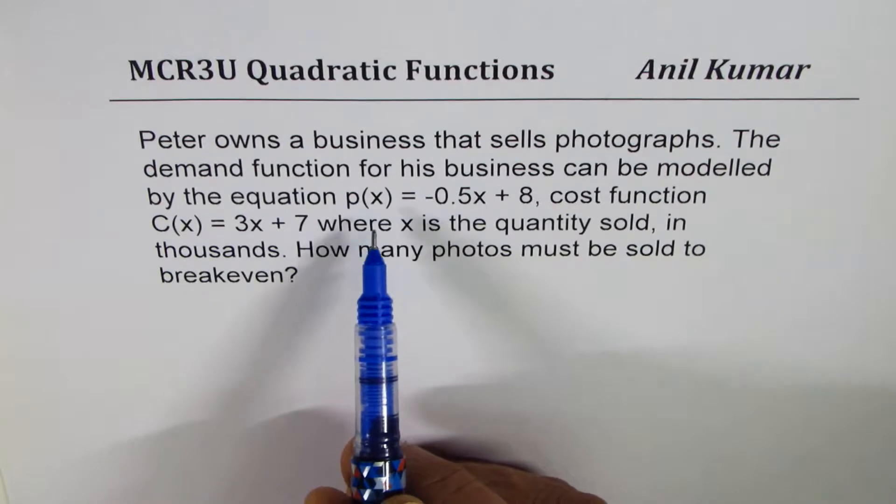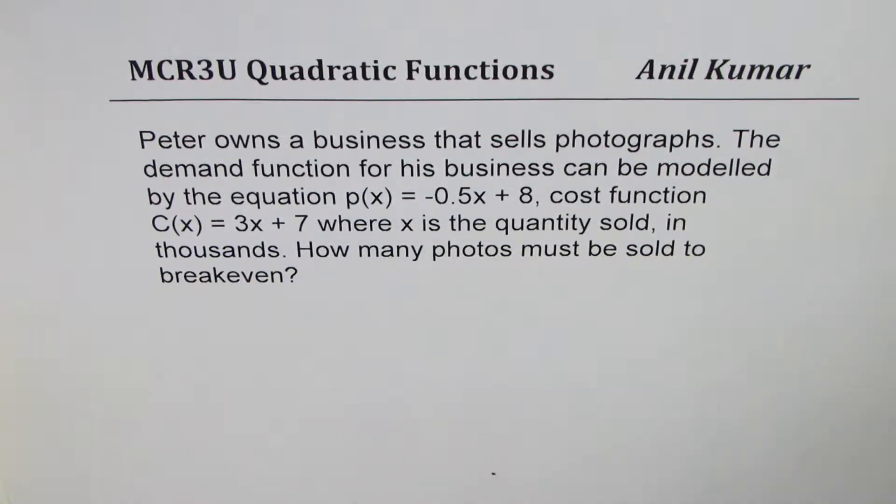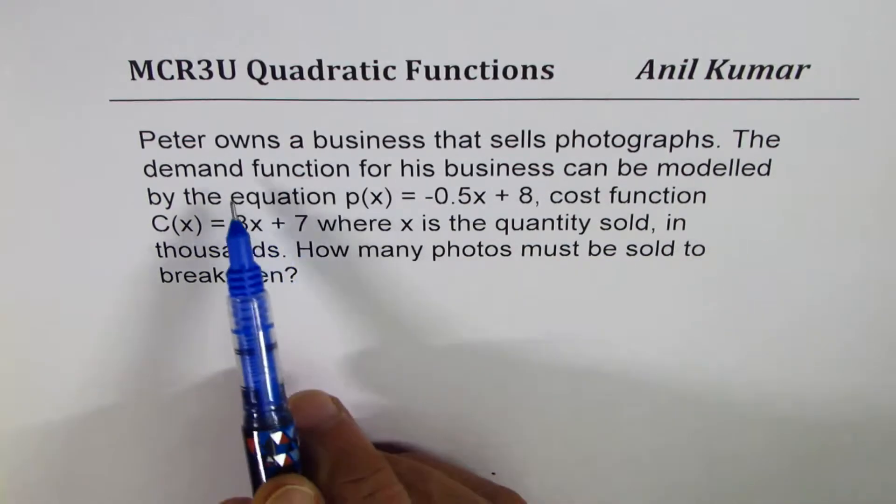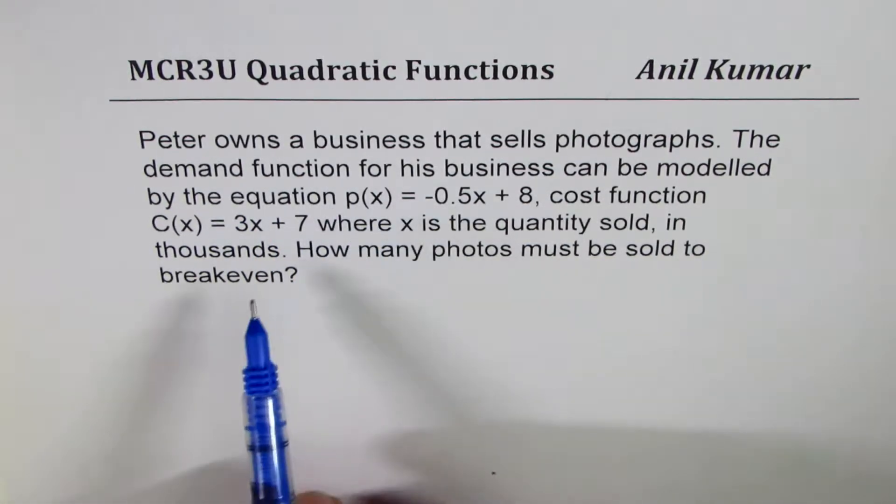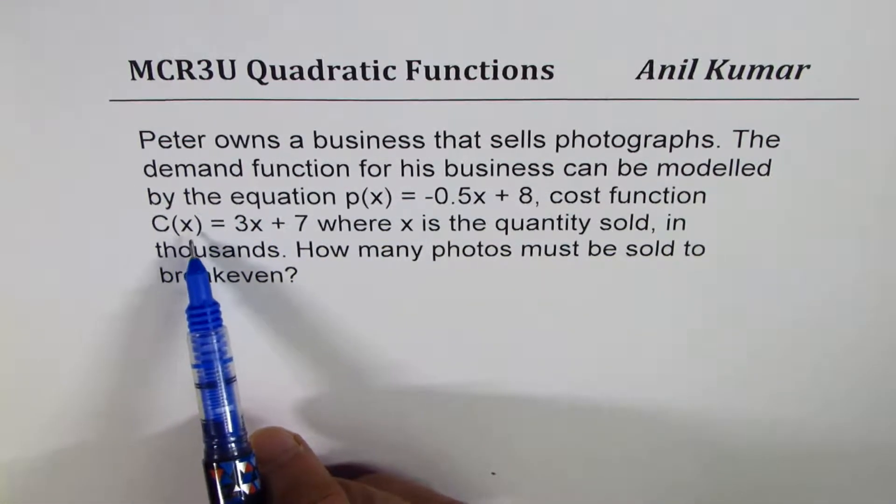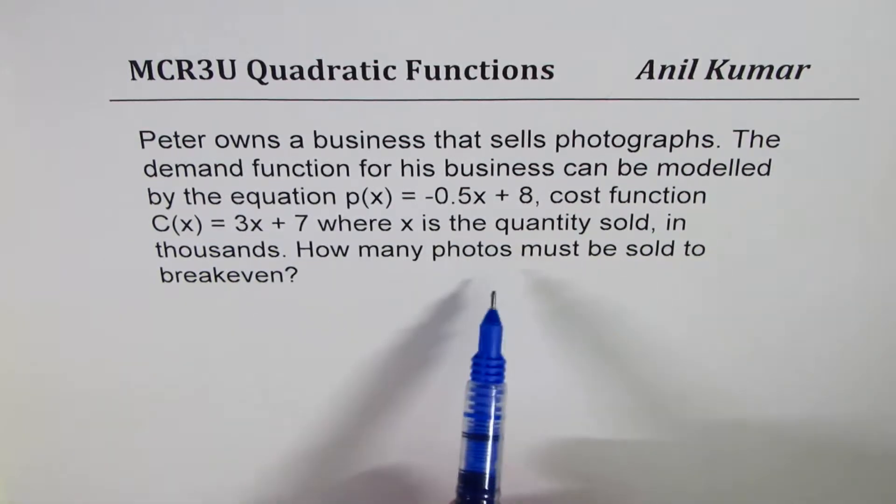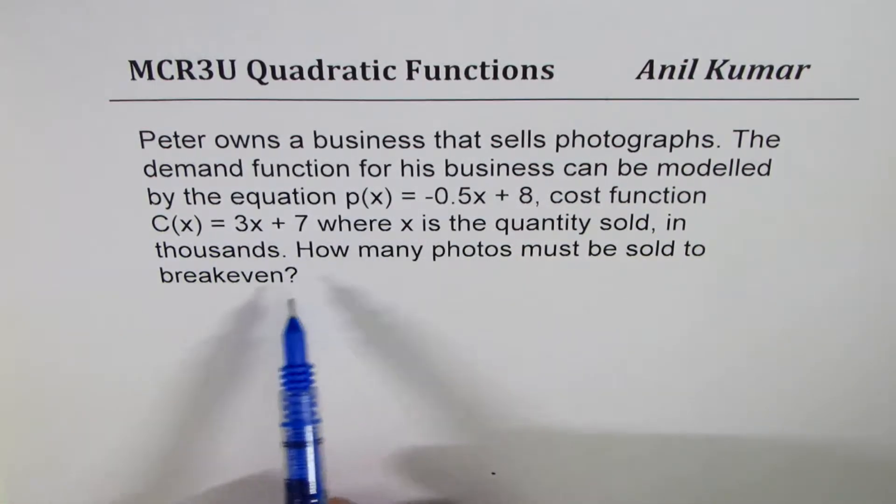Let's try to understand some of these terms which are mainly used in economics. When we say that the demand function is p(x) and cost is C(x) and we are talking about break even, how are they related?